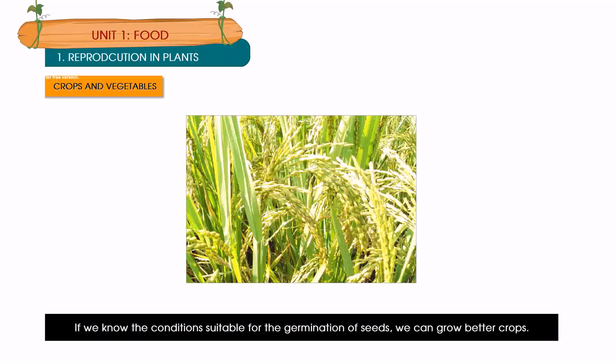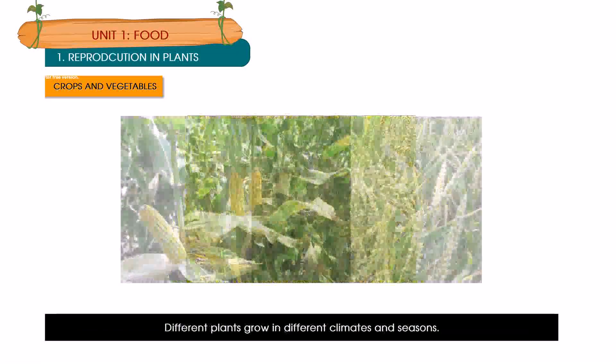Crops and vegetables: the plants of the same kind grown at a particular area at a particular time are called crops. If we know the conditions suitable for the germination of seeds, we can grow better crops. Different plants grow in different climates and seasons. They also require different kinds of soil.